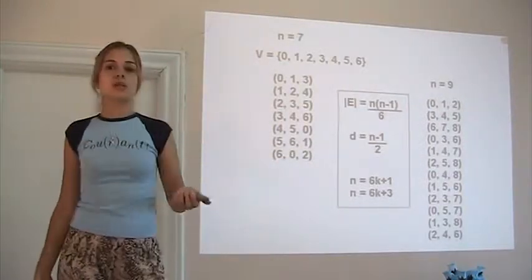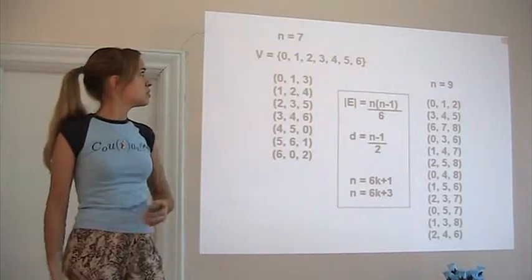These are the two smallest examples for each case: n equals 7 and n equals 9.